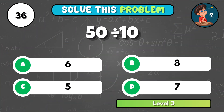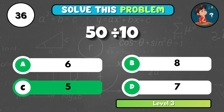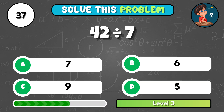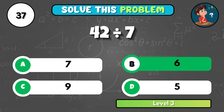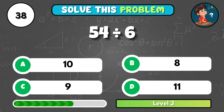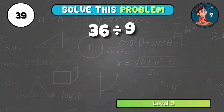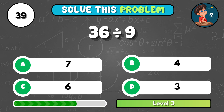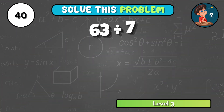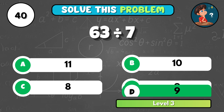Fifty divided by ten equals what? That's C, five. What do you get when forty-two is divided by seven? It's B, six. Can you figure out fifty-four divided by six? That's C, nine. Quick one: thirty-six divided by nine gives you what? It equals B, four. Here comes another: sixty-three divided by seven equals... That's D, nine.